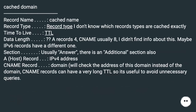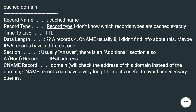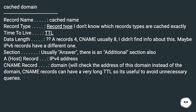Cached domain. Record name: cached name. Record type: I don't know exactly which record types are cached. Time to live: TTL. Data length: A records are 4 bytes; name records are usually 8 — I didn't find more info about this; maybe IPv6 records have a different value. Section: usually "answer," though there is an additional section also.